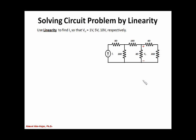This is a classical circuit with one source and a bunch of resistors. The approach is to work the circuit backward, starting with the output. We say the output is 1 volt. I can define the current going through the 4 ohm resistor, calling it Iout. Iout equals Vout over 4 ohms, which is 1 over 4, or 0.25 amps.